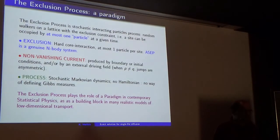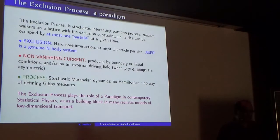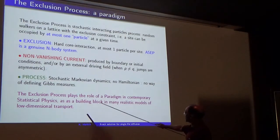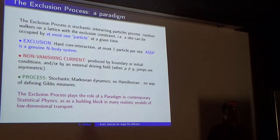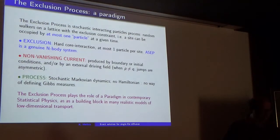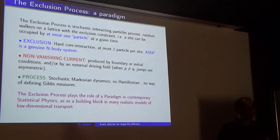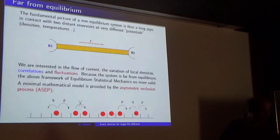There's no H, so you would write exponential minus beta H, anyway. It's a paradigm, and it's also a building block in many more realistic models — for example, in biophysics. As long as you have one-dimensional transport and geometric constraints, exclusion constraints, are important, this model pops out.